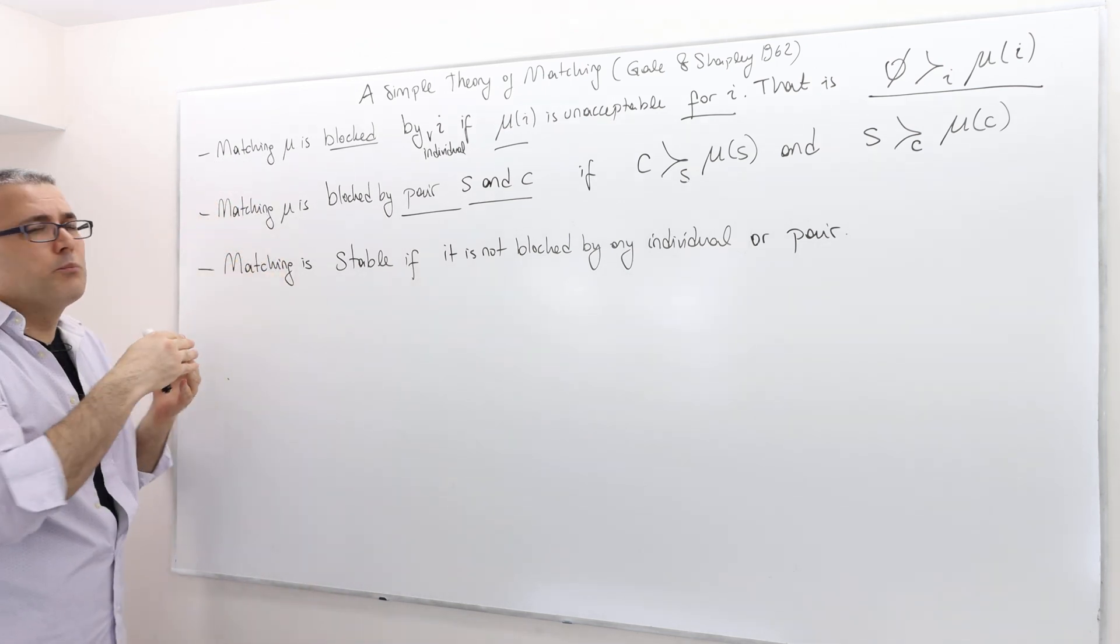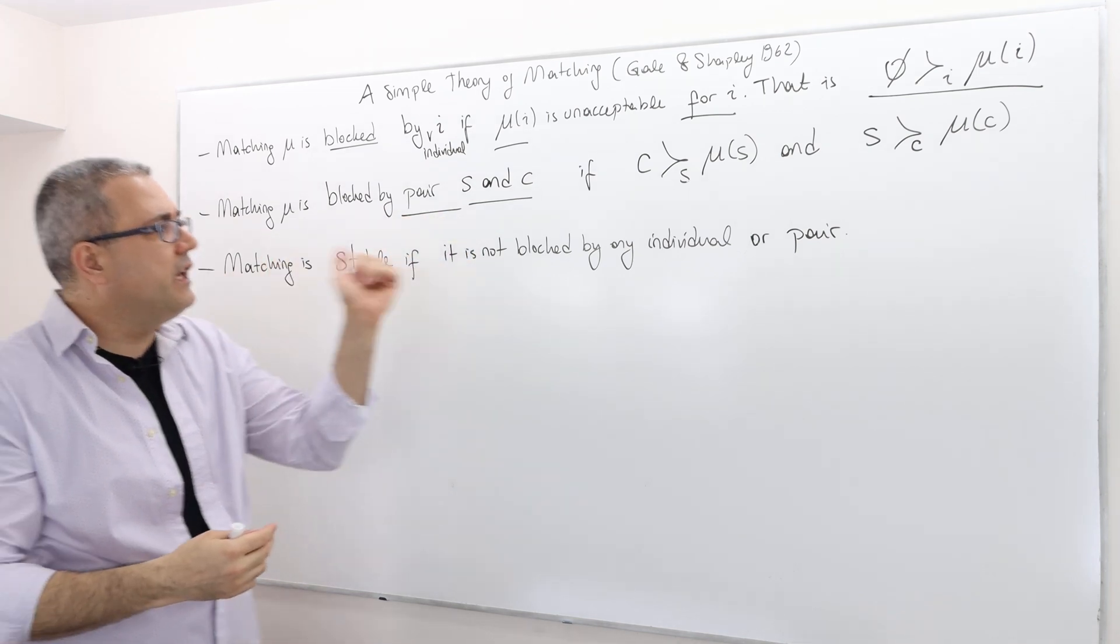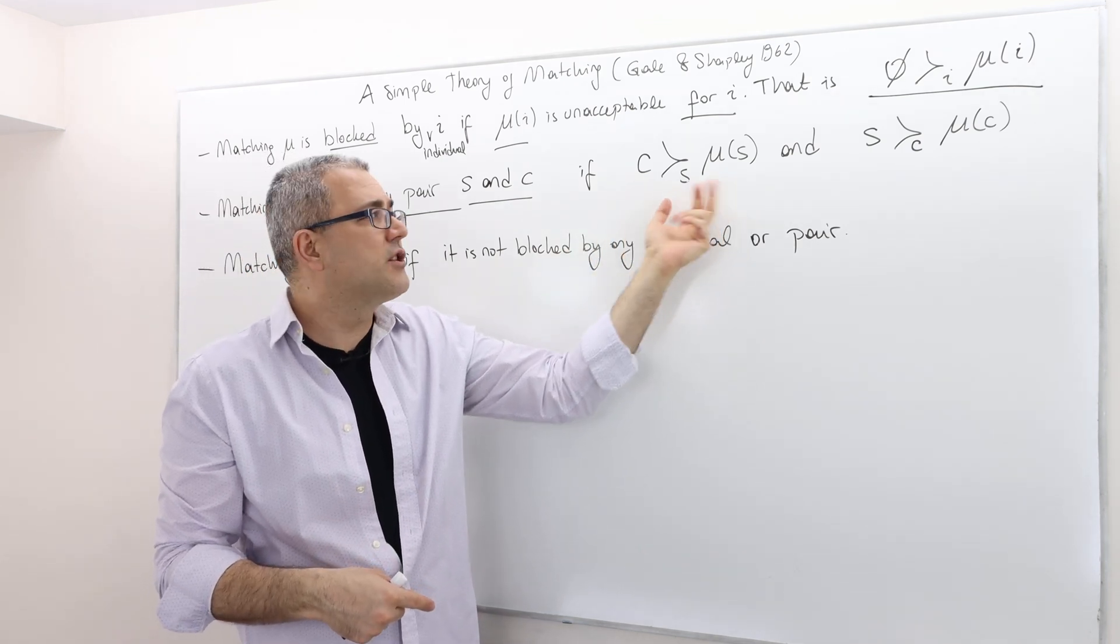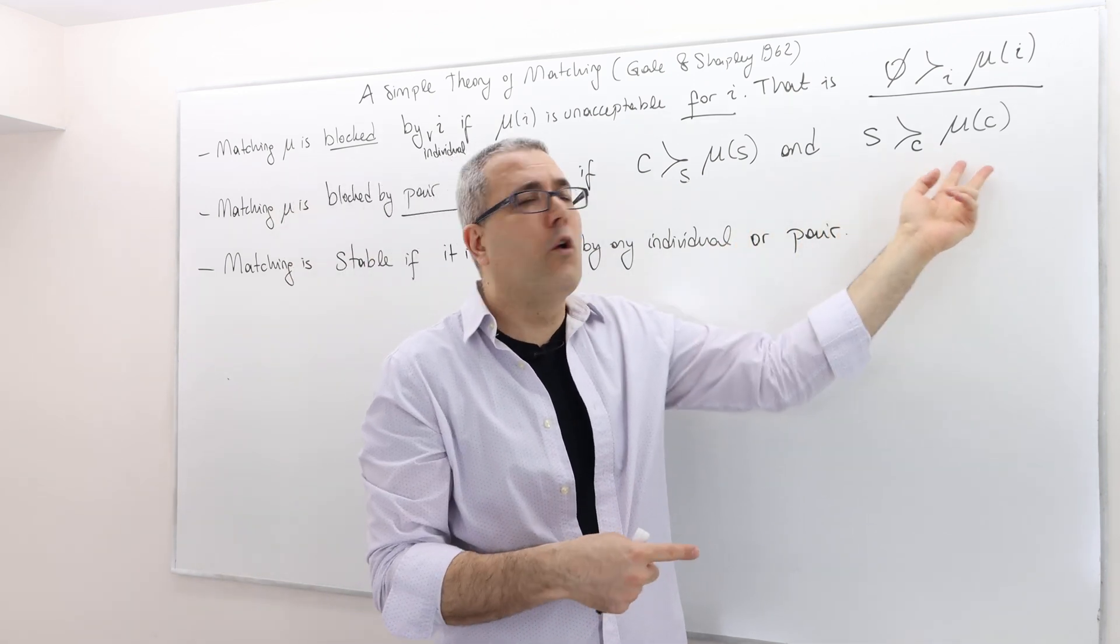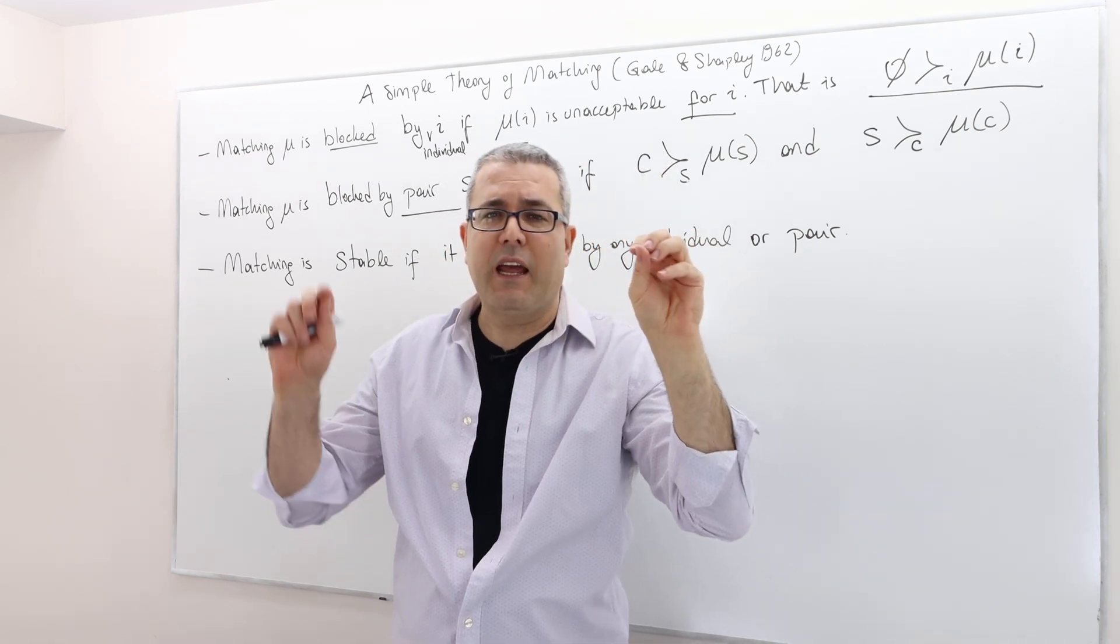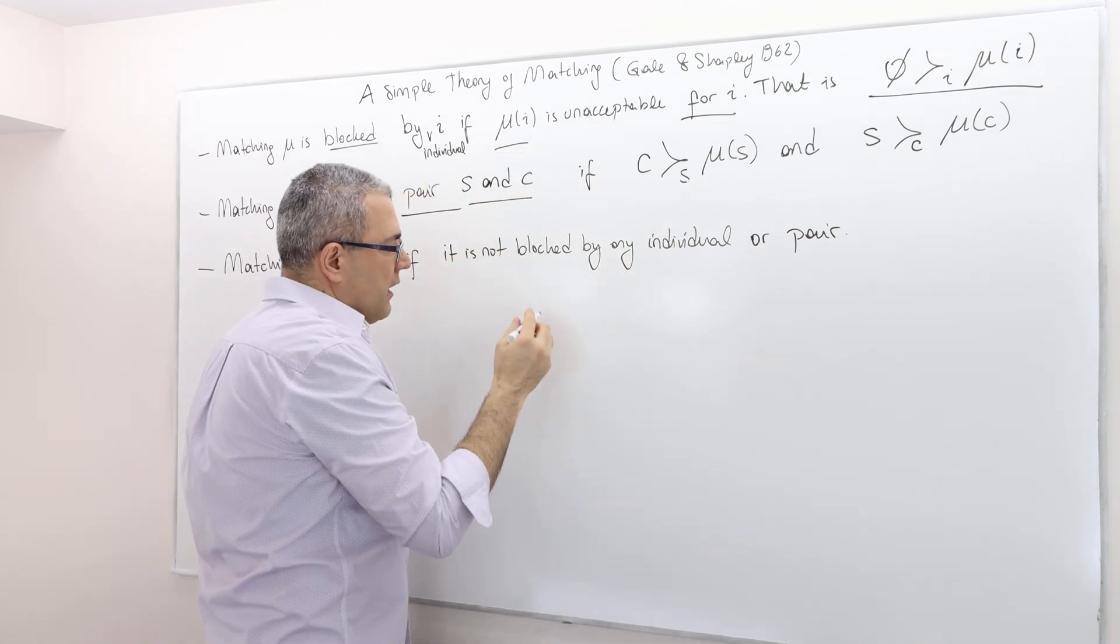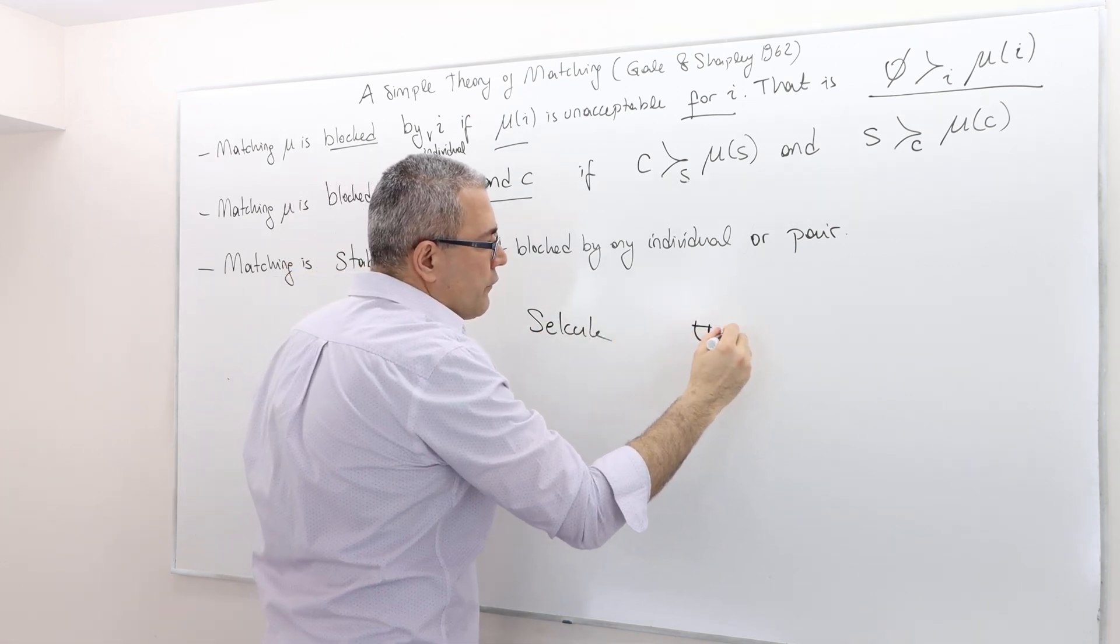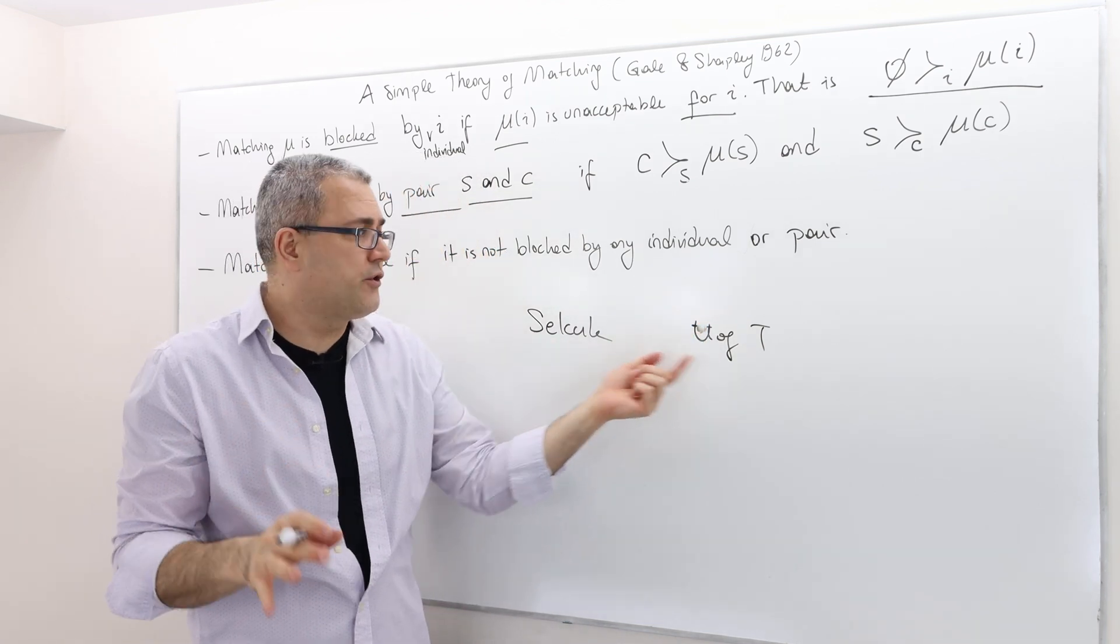Matching mu is blocked by pair s and c, so one student, one college, if c is preferred by student s over his match and student s is preferred by the college c over its match. So what's happening is there's a student and college pair. So student is Selçuk and then the college is University of Toronto. Selçuk is not matched to U of T.